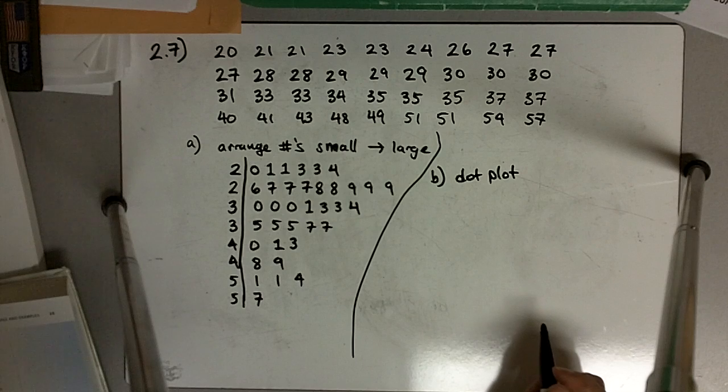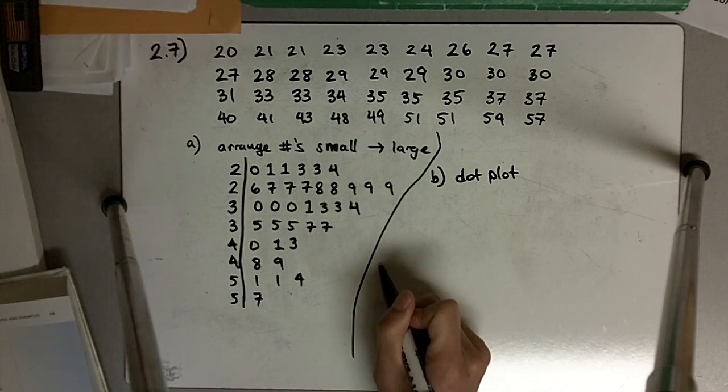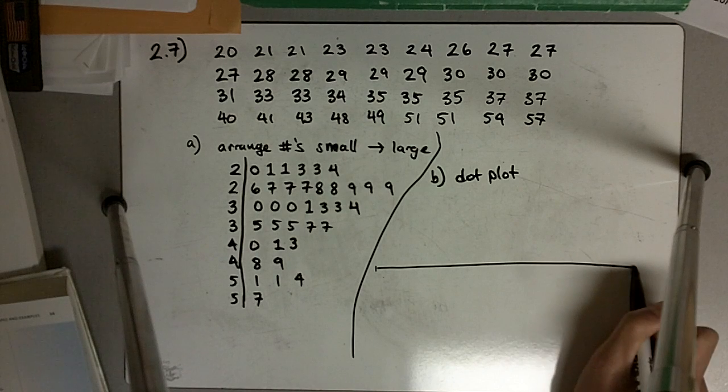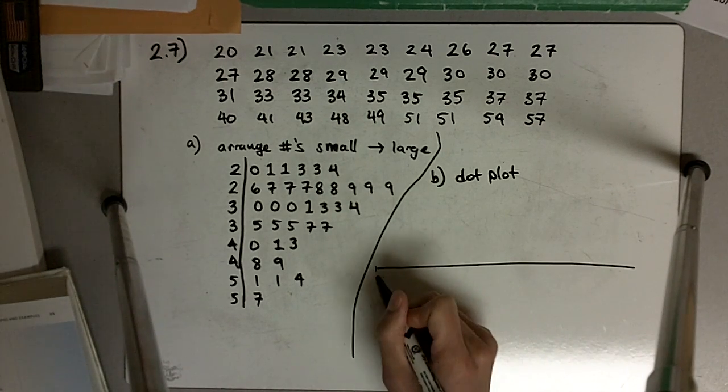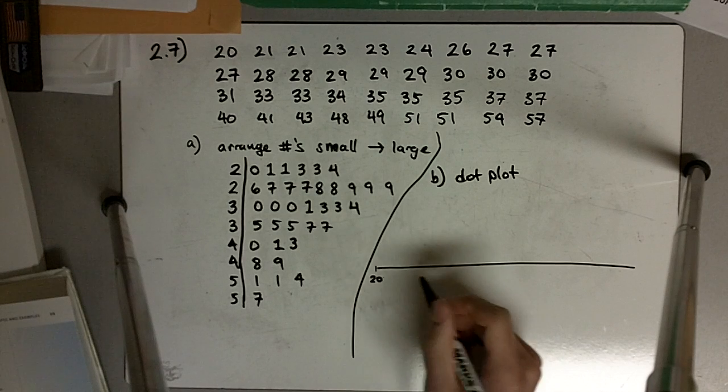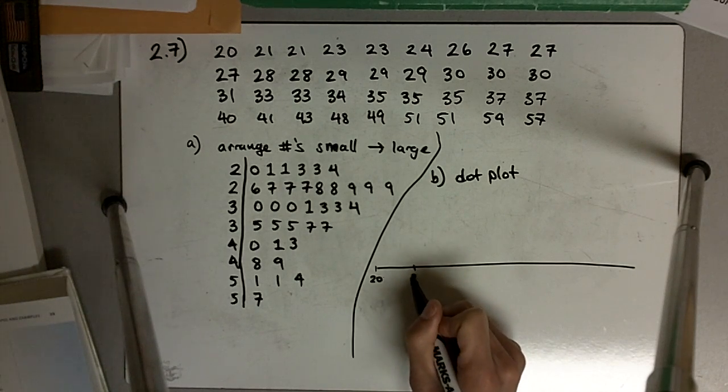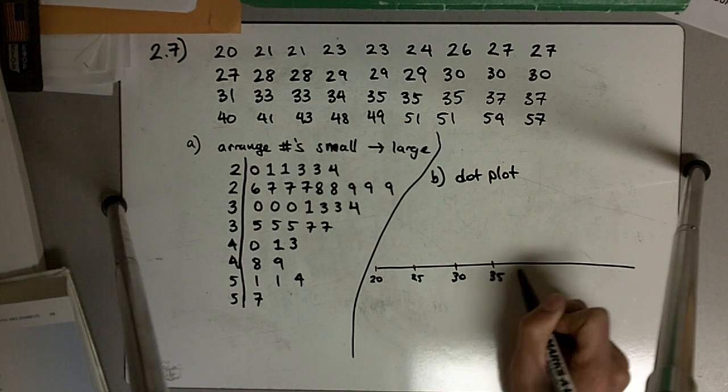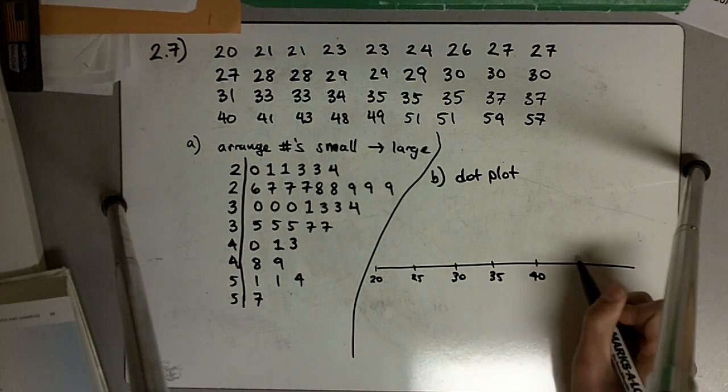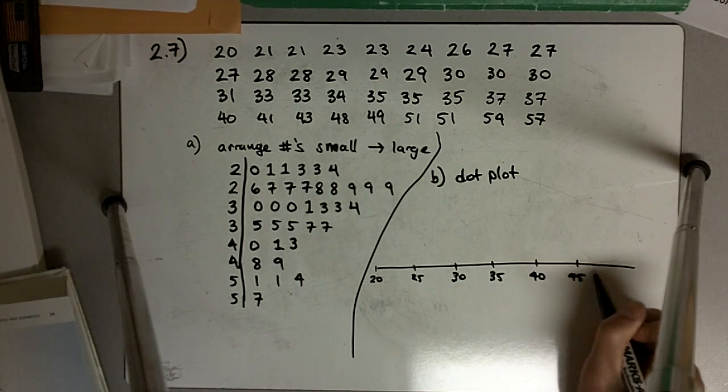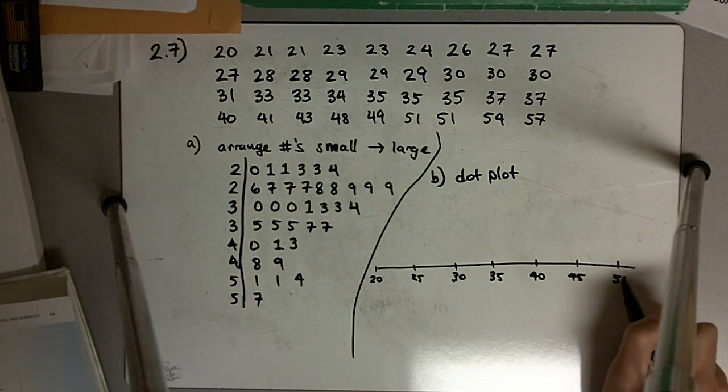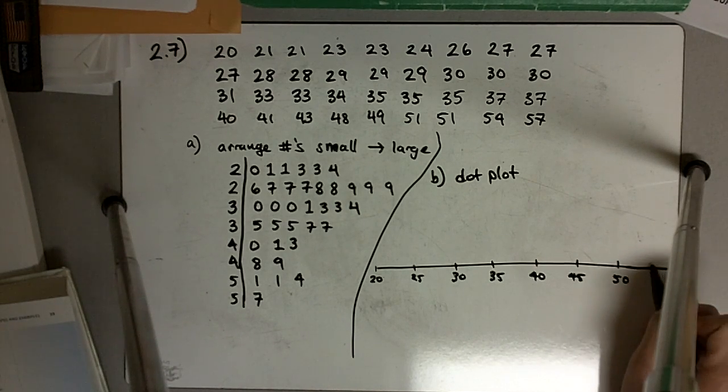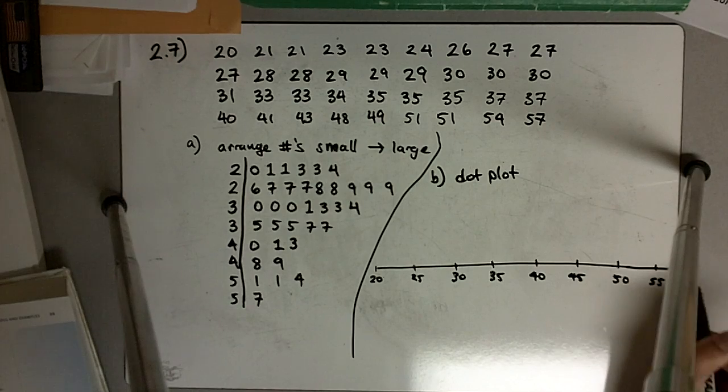This is now a graphical display, and it ranges from 20 to 57, so I'm going to break these off and do 20, 25, 30, 35. I hope I don't run out of space. 45, 50, and I might be squeezing in 57 here, 55.